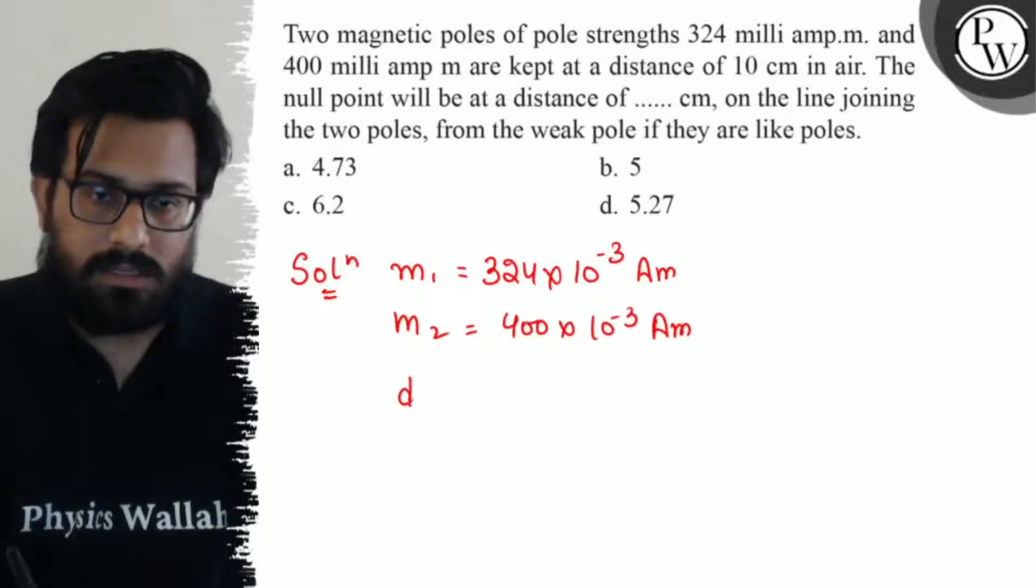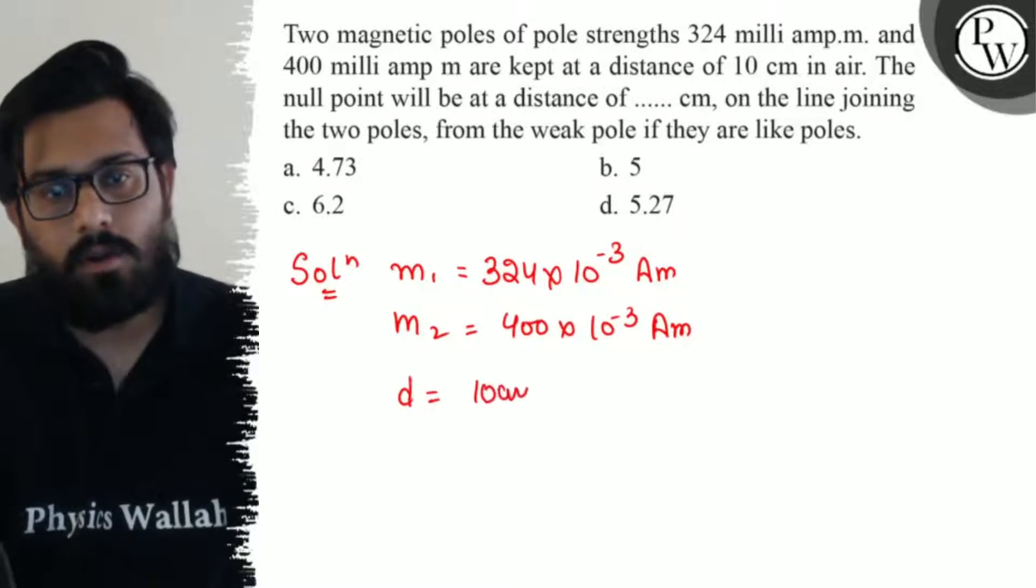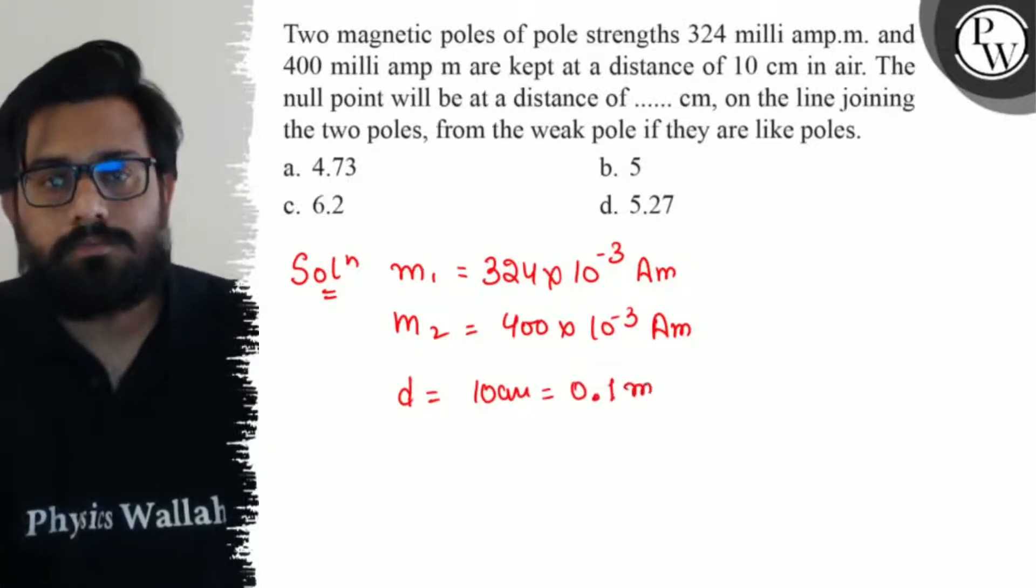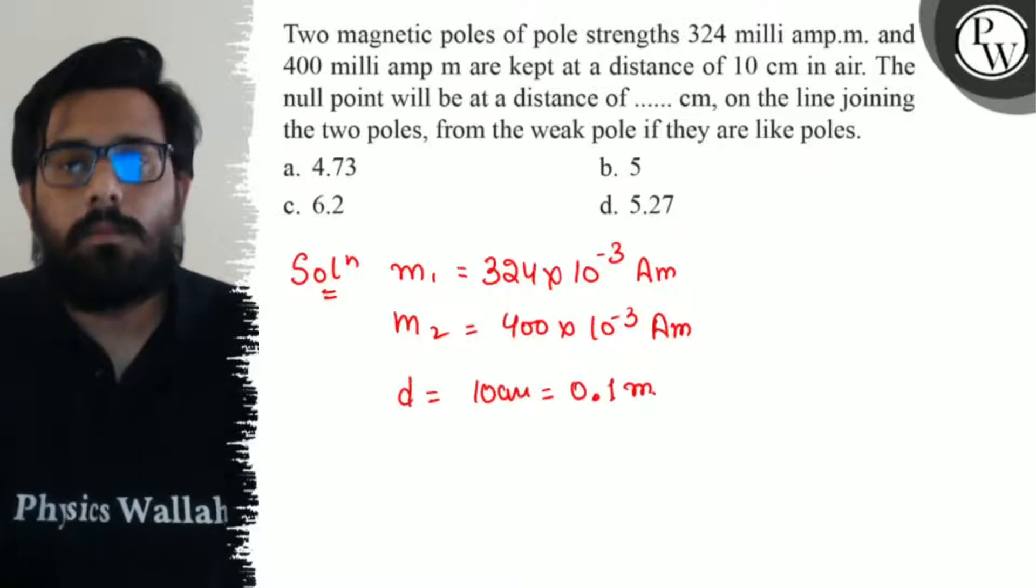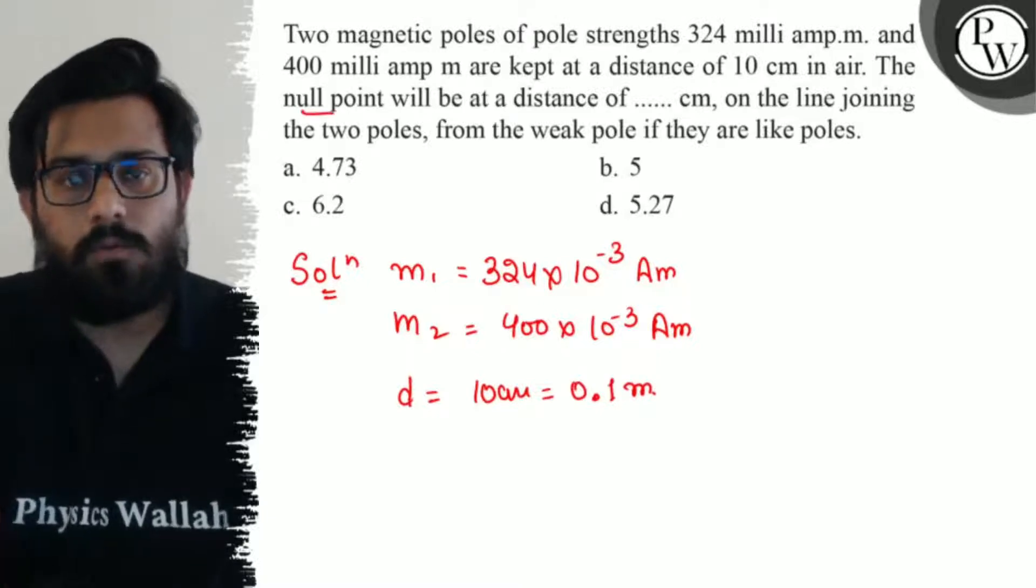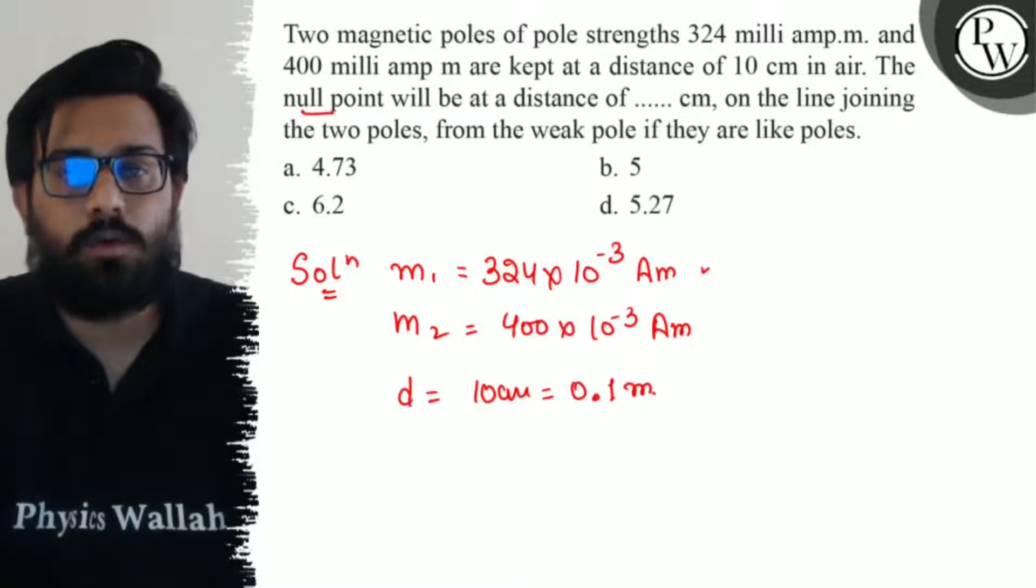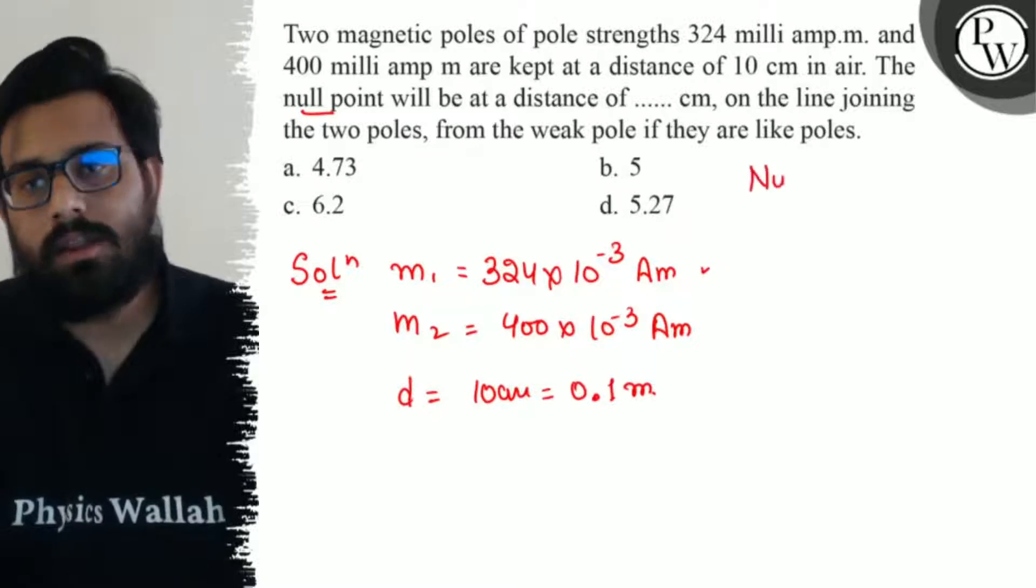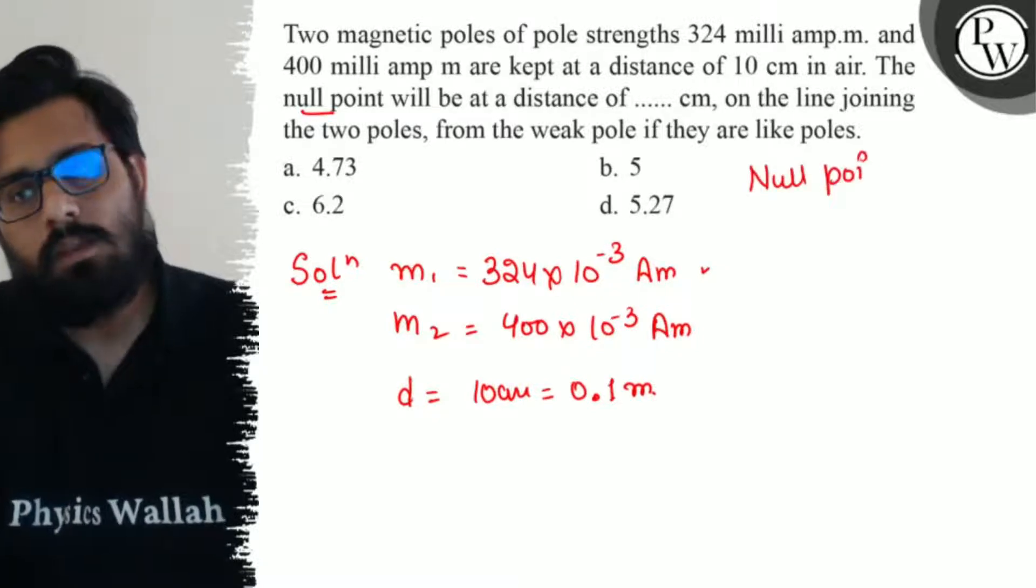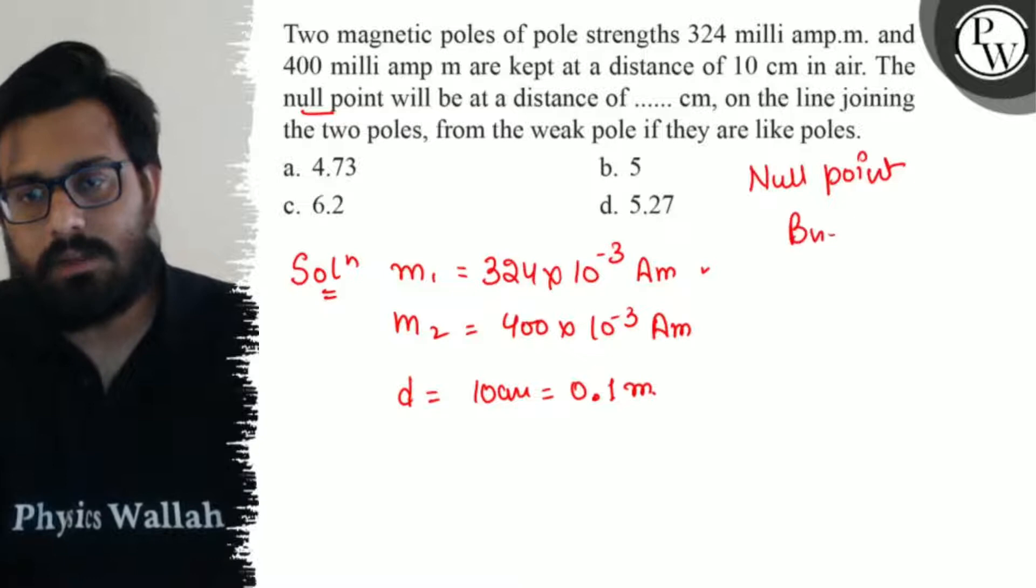The distance between them is 10 centimeter or you can say 0.1 meter. Now the null point is the point where the net magnetic field zero ho jata hai.